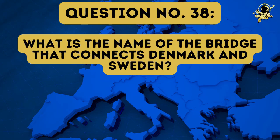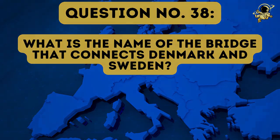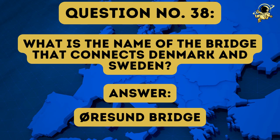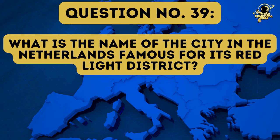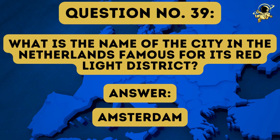Question number thirty-eight: What is the name of the bridge that connects Denmark and Sweden? And the answer to question number thirty-eight is the Øresund Bridge. Question number thirty-nine: What is the name of the city in the Netherlands famous for its red light district? And the answer to question number thirty-nine is Amsterdam. But of course they are famous for more than just their red light district.